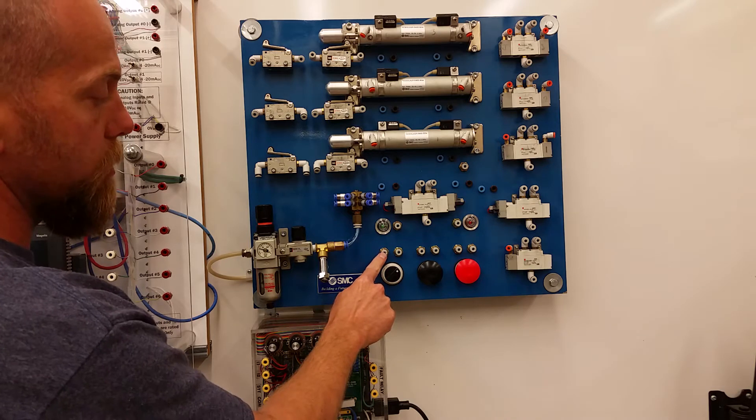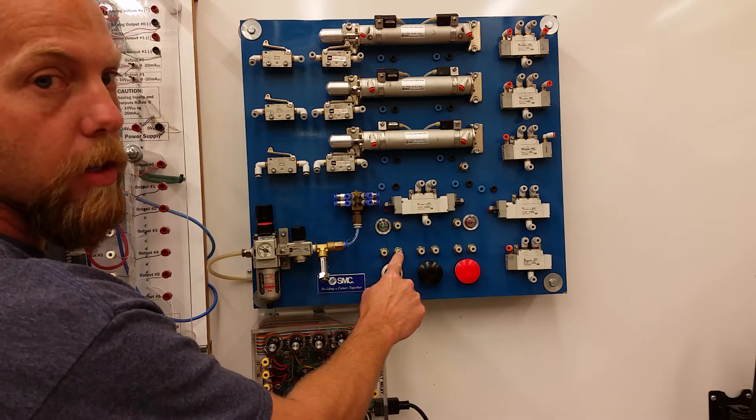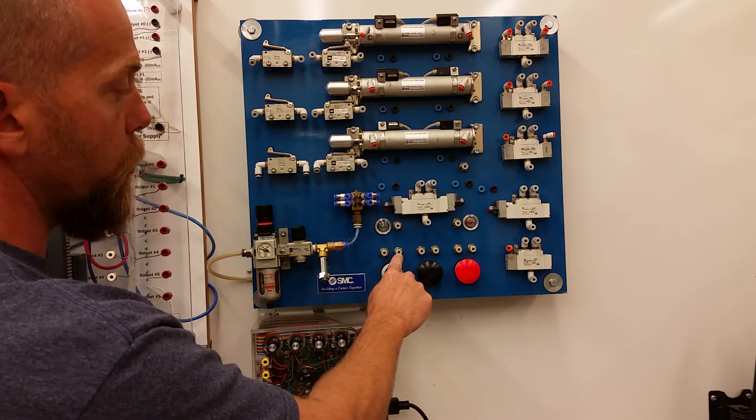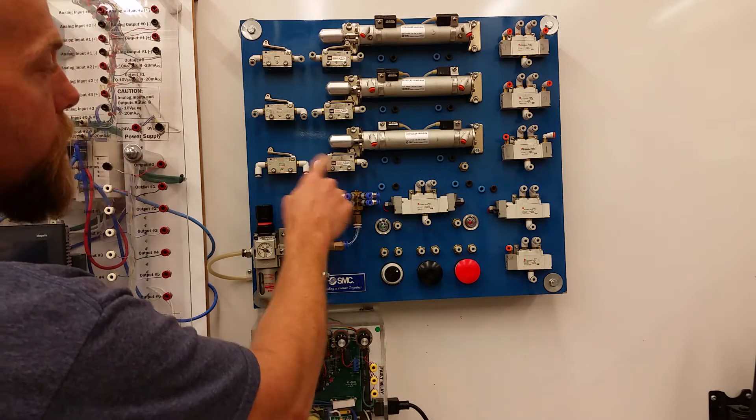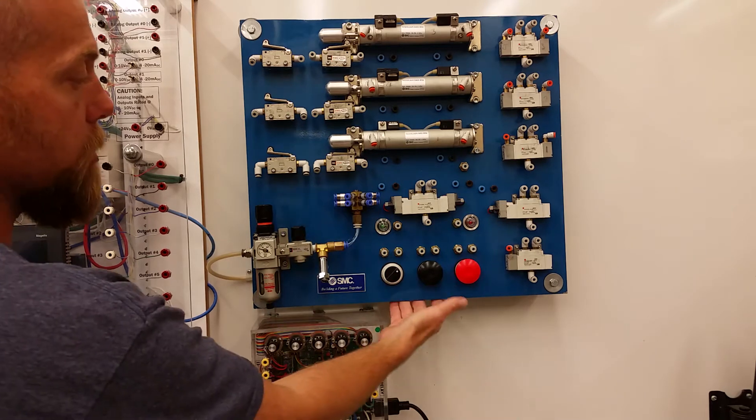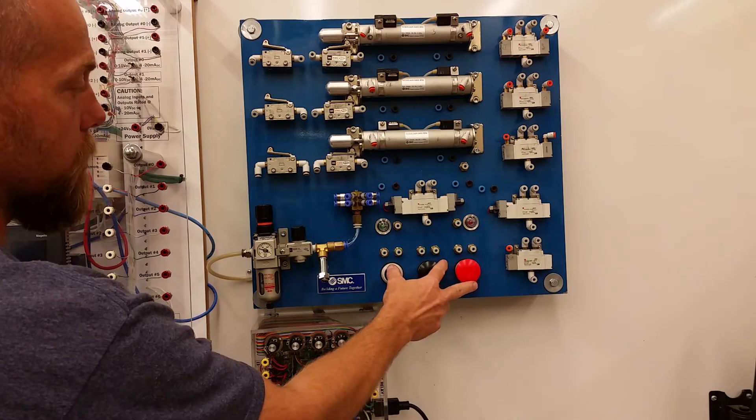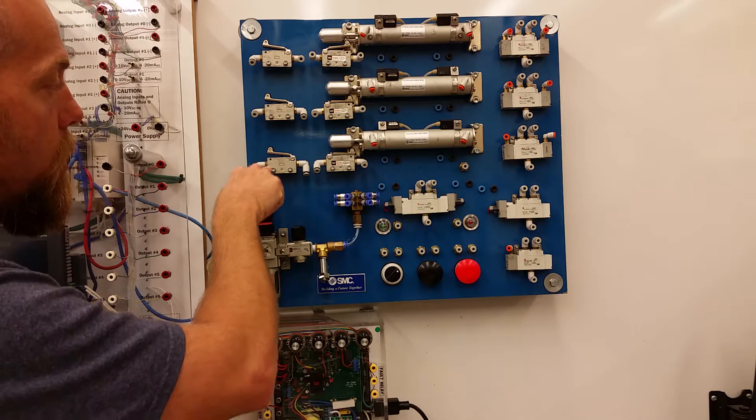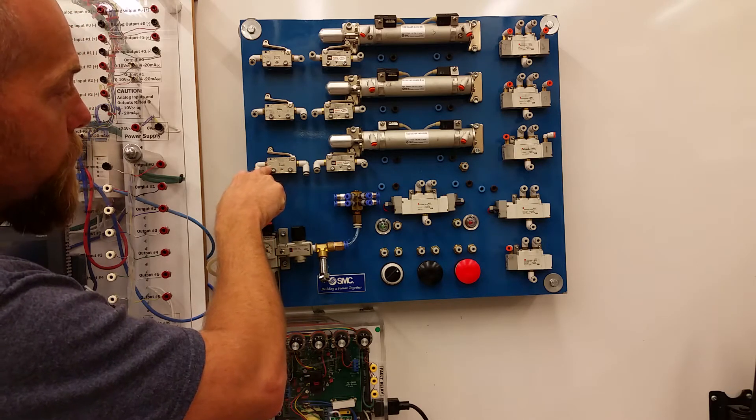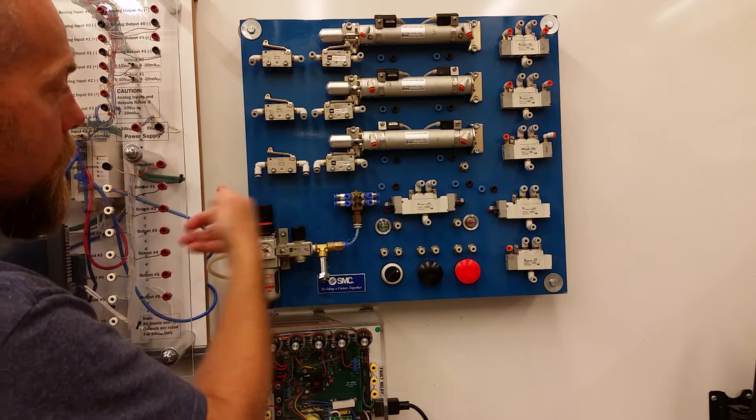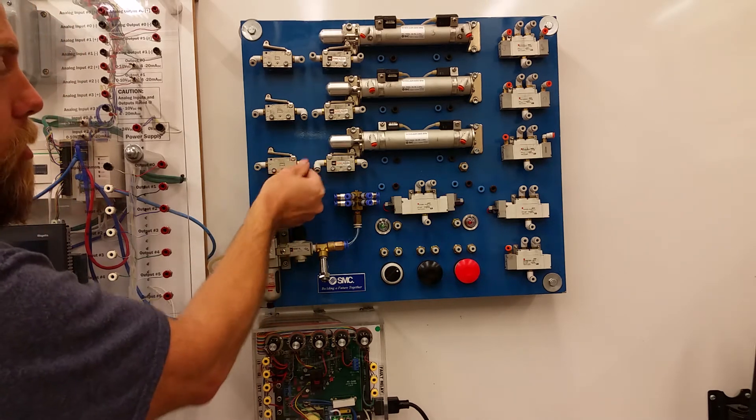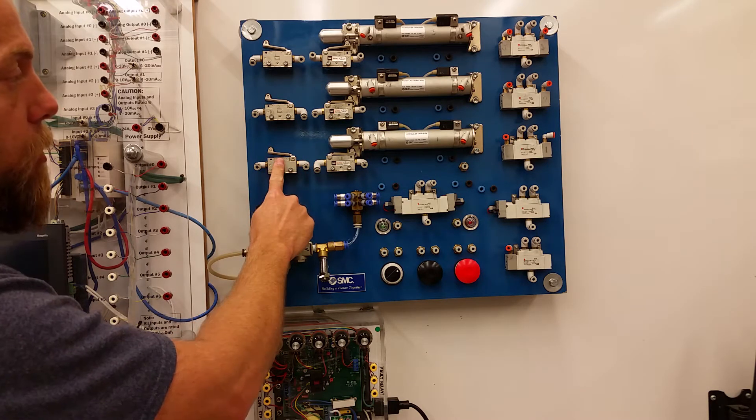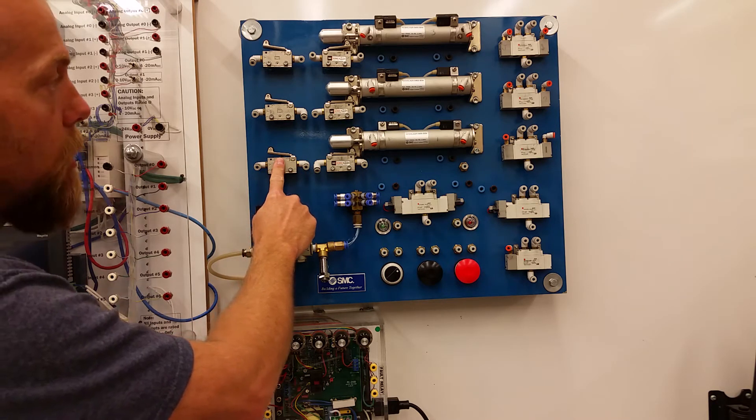These guys have an input on the left-hand side and an output on the right-hand side. This would correspond to port number one. This would correspond to port number two. If you take a closer look at the limit switches, they are the exact same as the 3-2's for the push buttons and the selector switch. But they have a direction of flow. You might not be able to make it out right there. But there is an actual arrow here to denote that the air is coming in. So this would be port number one. This would be port number two. And then integral to the switch is port number three, which is the exhaust.